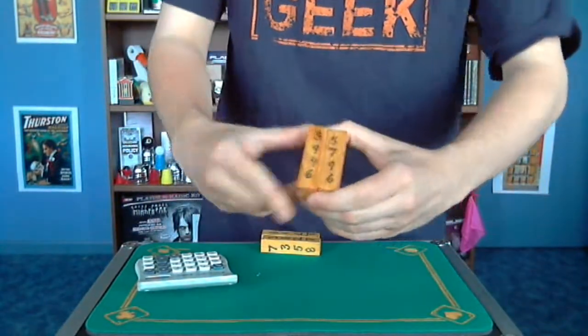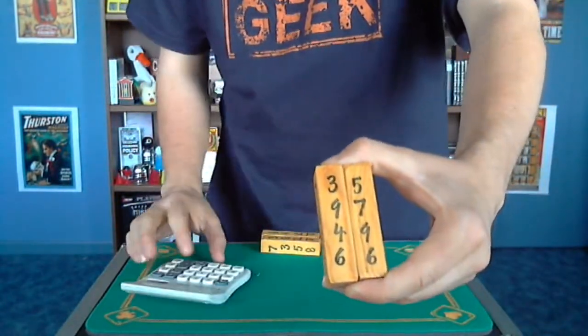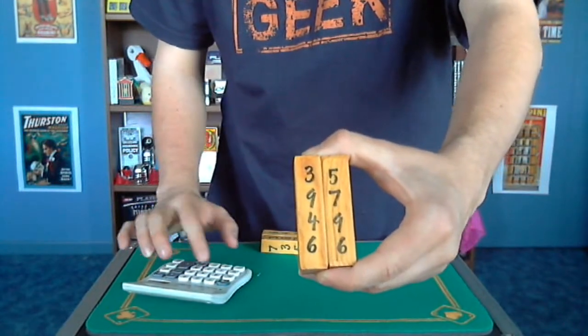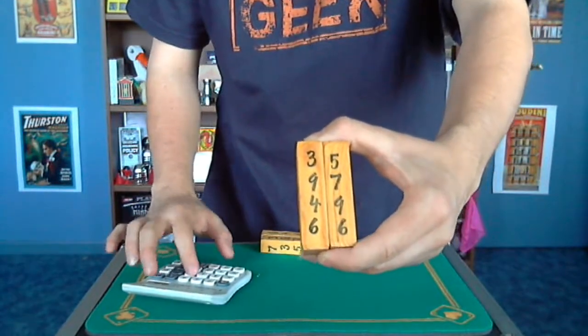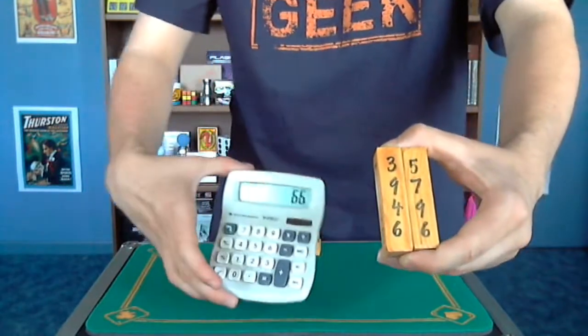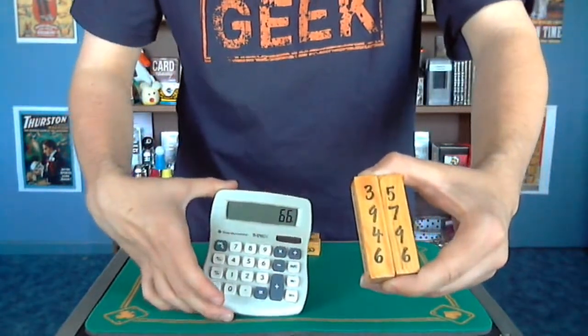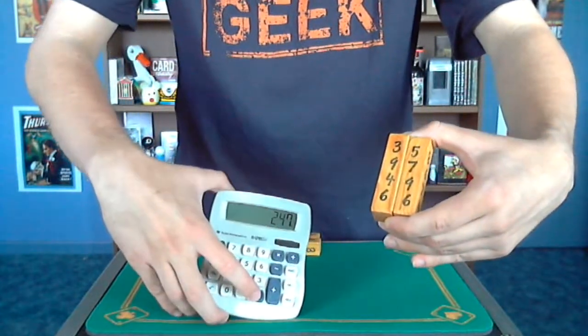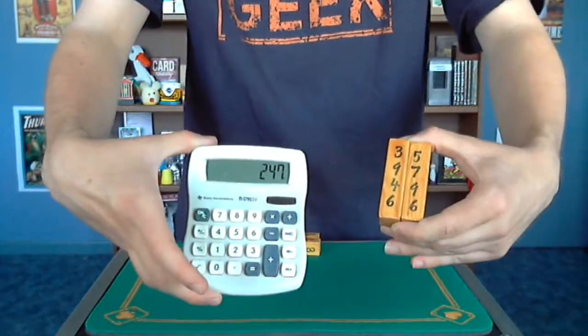So this is going to be 247. So if we do 35 plus 97 plus 49 plus 66. Before I hit equals, I'm not going to hit equals yet. But it's going to be 247. Let's see. 247. Look at that.